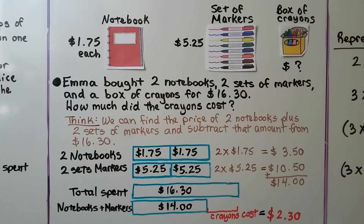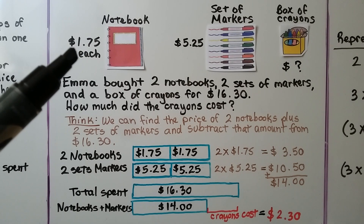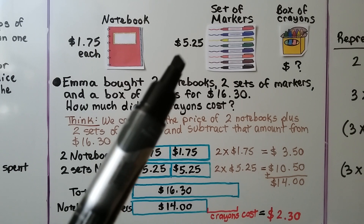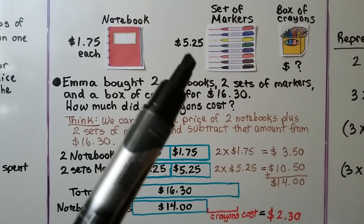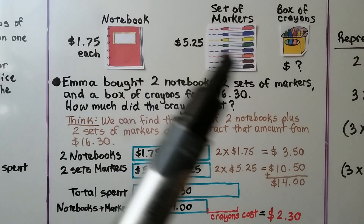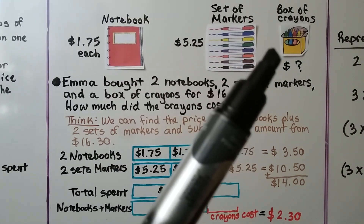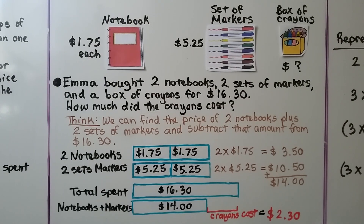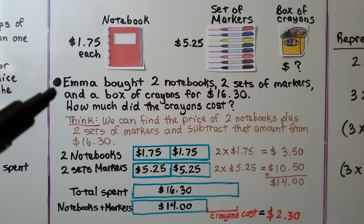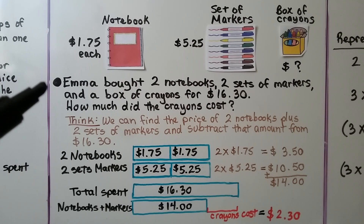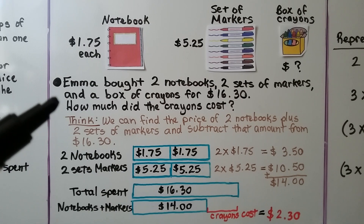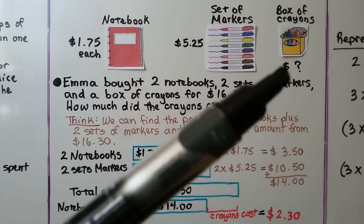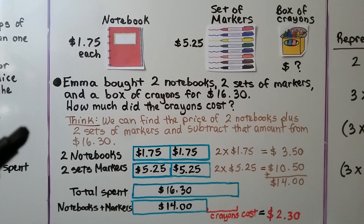This problem shows that notebooks are $1.75 each and sets of markers are $5.25 each, but it doesn't tell us the price of the box of crayons. Emma bought 2 notebooks, 2 sets of markers, and a box of crayons for $16.30. How much did the crayons cost?